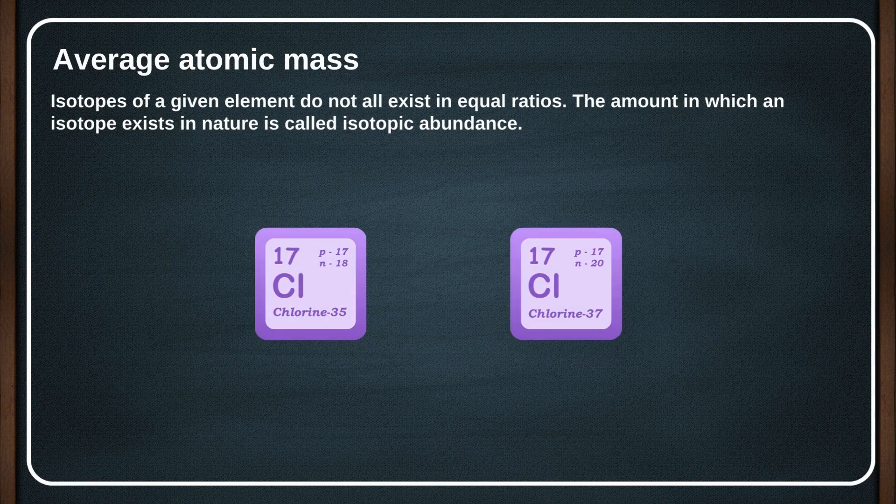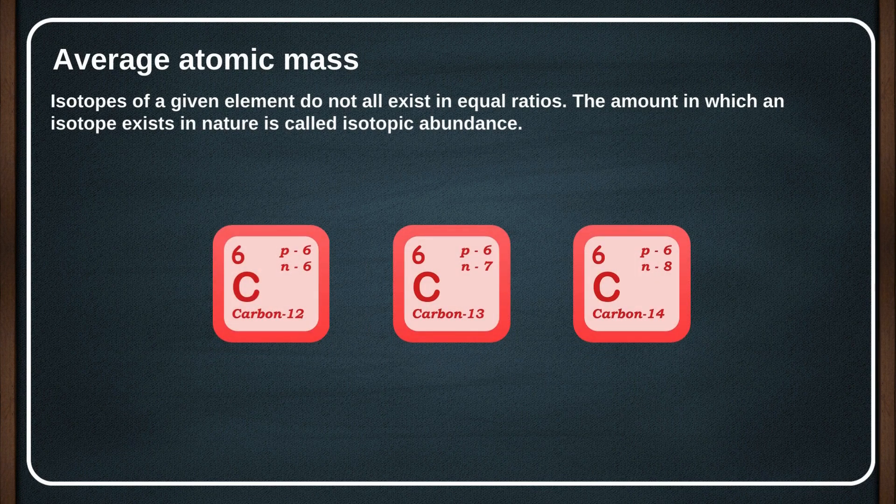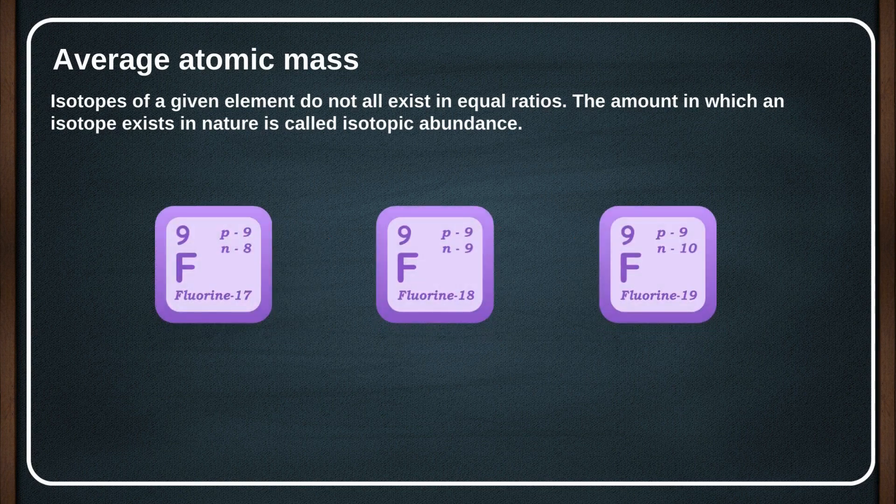Isotopes of a given element do not all exist in equal ratios. The amount in which an isotope exists in nature is called isotopic abundance.